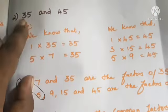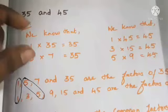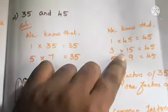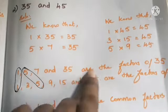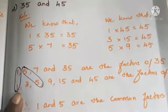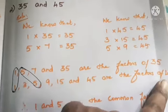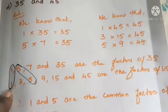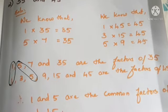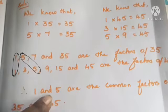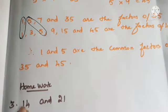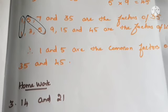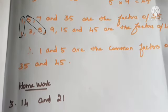To summarize: find the factors of 35 and 45 using the multiplication method, write both factor lists, find the common numbers by circling them with pencil, and write therefore 1 and 5 are the common factors of 35 and 45. For homework, find the common factors of 14 and 21. Complete Roman numerals 3 and 4 for homework. The remaining portions will be discussed in the next class. Thank you so much, bye.